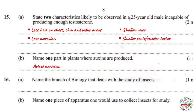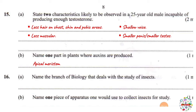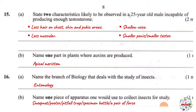Question 16, part A: name the branch of biology that deals with the study of insects. That is entomology. Part B: name one piece of apparatus used to collect insects for study. There are actually multiple options — you can mention the sweep net, specimen bottle, pitfall trap, bait trap, a pair of forceps, or a pooter. All of these are correct.